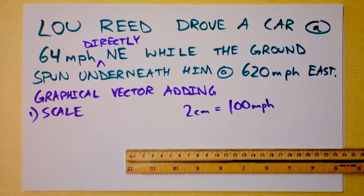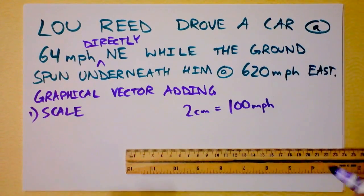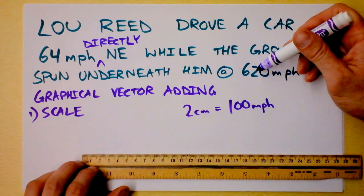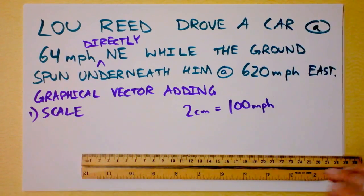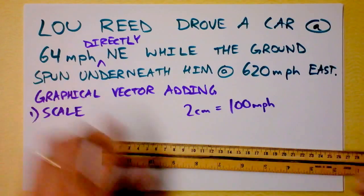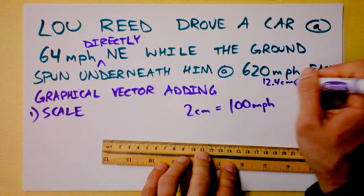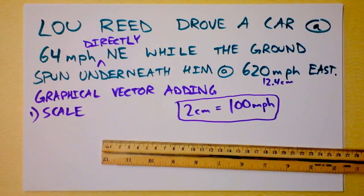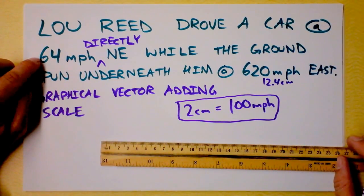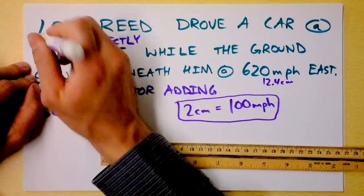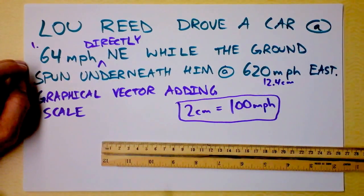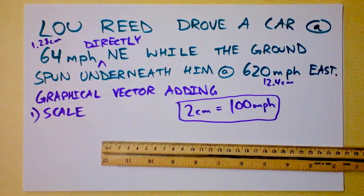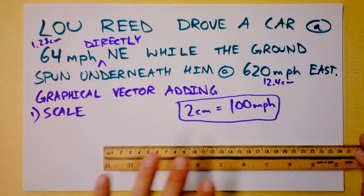With that scale, 620 miles per hour would be represented by 12.4 centimeters. And 64 miles per hour is going to be represented by 1.28 centimeters. We'll have to add these guys together.